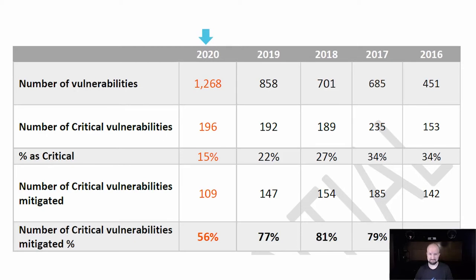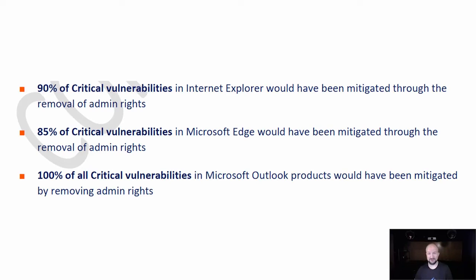In 2020, only 56% of all vulnerabilities would not work if you were not an admin. But even more importantly: 85% of critical vulnerabilities in the new Microsoft Edge with the Chromium engine would be mitigated, and 100% of all critical vulnerabilities in Microsoft Outlook. Given that 95% of all malicious content comes through email or the browser, if we can block almost every single vulnerability from those sources by not being an admin — trust me, we are not going to give you admin rights. Just stop doing that.